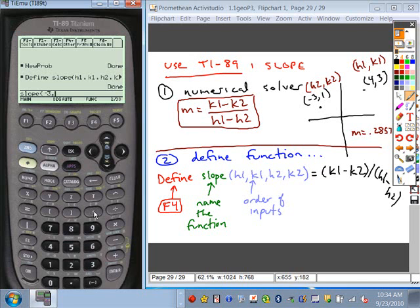So negative 3, comma, 1, comma, 4, comma, 3. Close the parentheses, and when you hit enter, it should calculate the slope for you. If you've done everything right, you should get, what did we get, 2 sevenths for that? So if we hit enter, we get 2 sevenths. So I entered all of this, this whole function correctly.